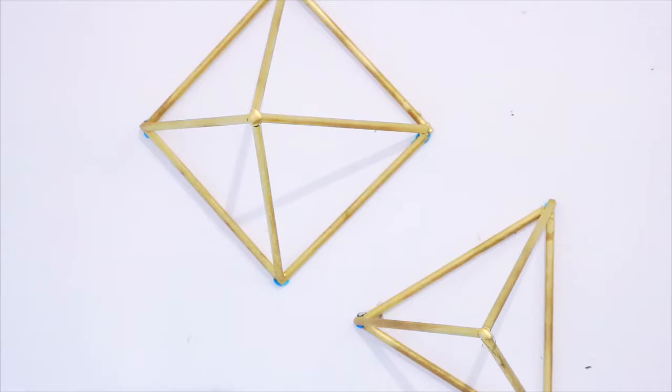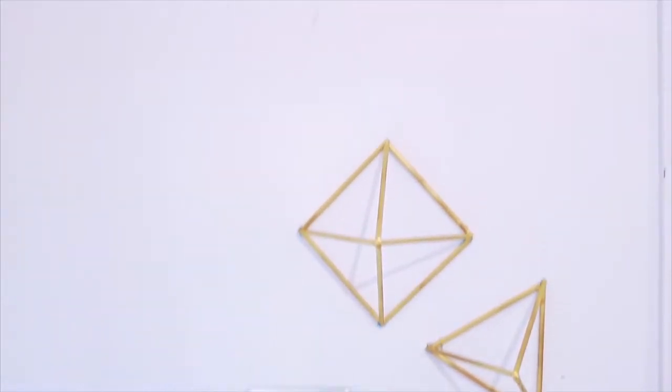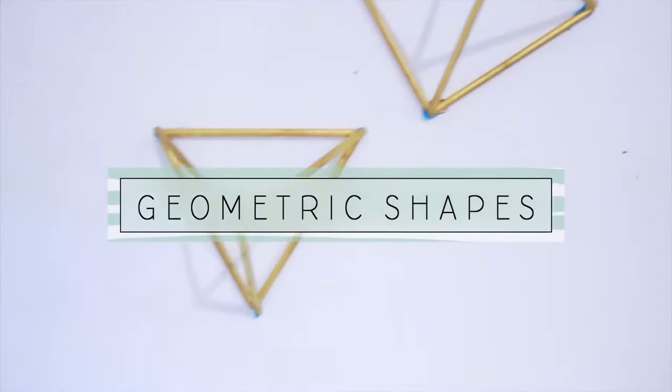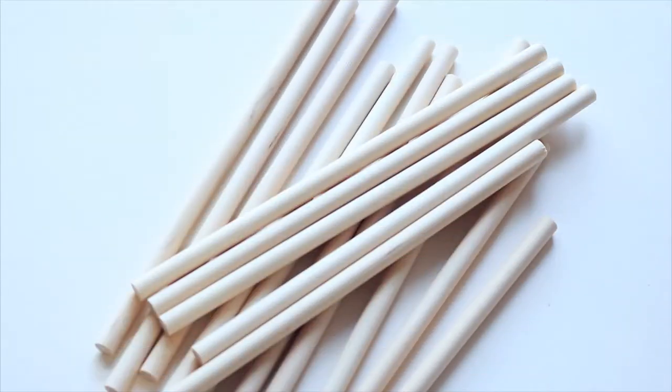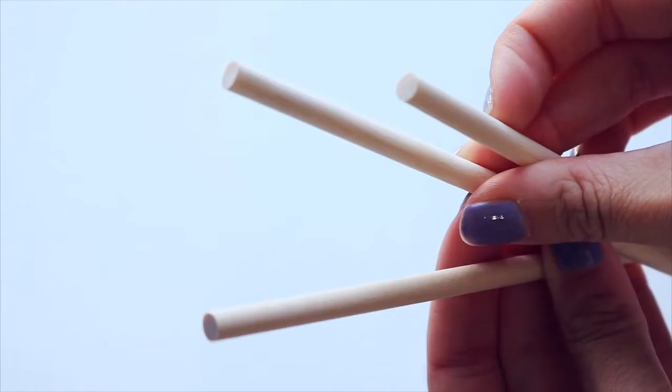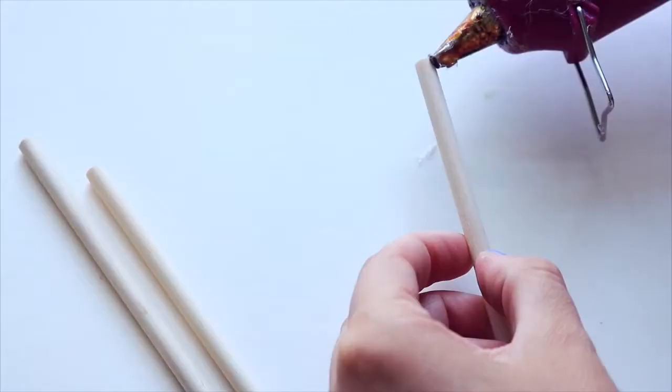This first project is something I've wanted to make for a really long time now and it's these geometric wall shapes that you see everywhere all over Pinterest. I picked up these wooden dowel sticks from the dollar store and they have a flat top to them which is really nice for this project because it helps glue them together.